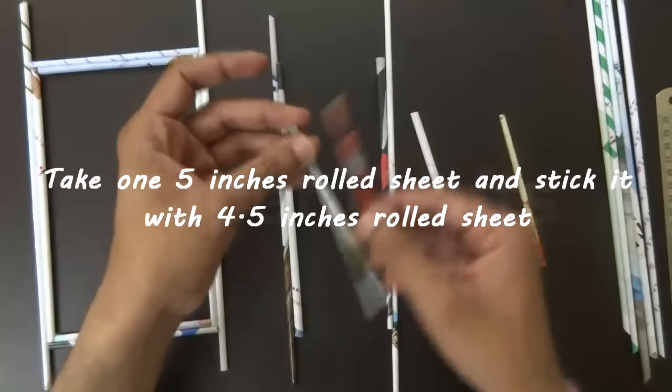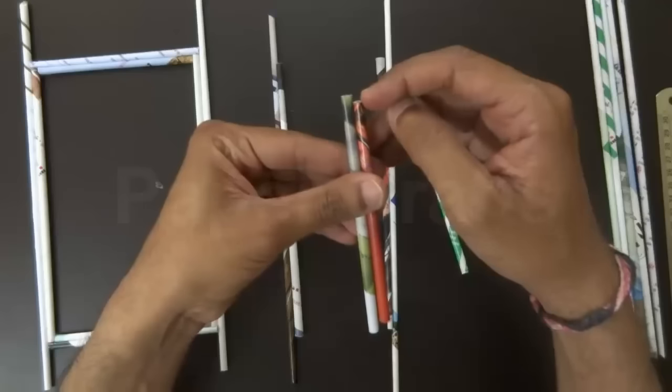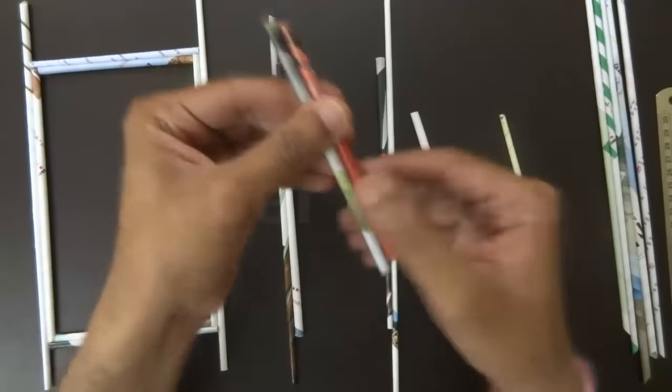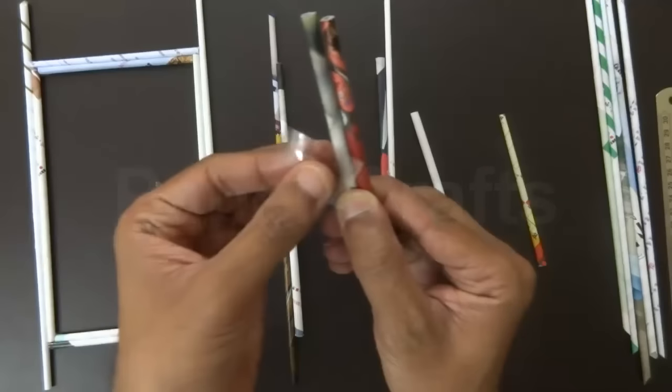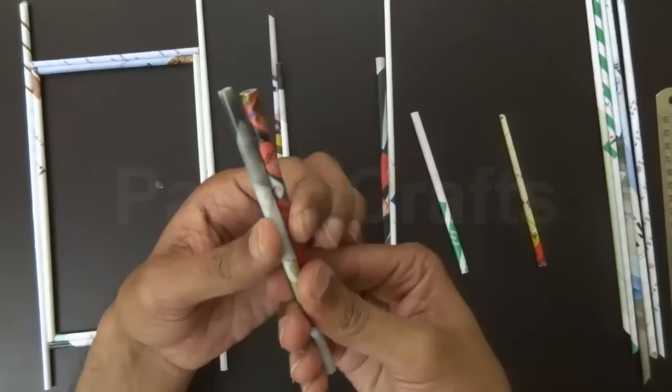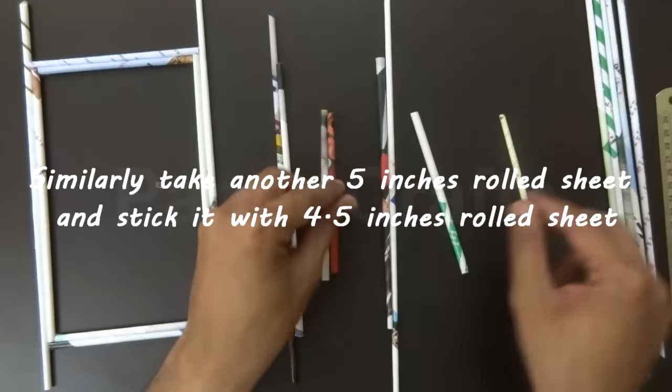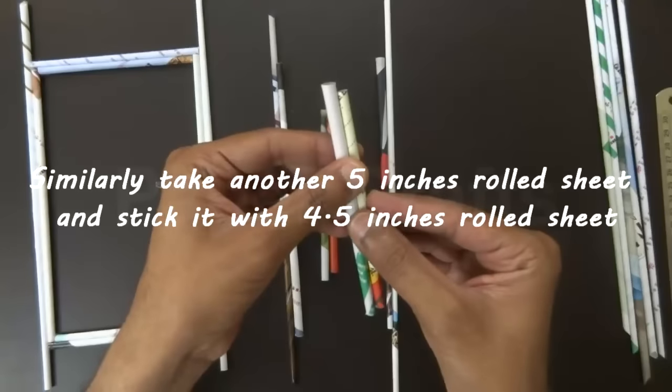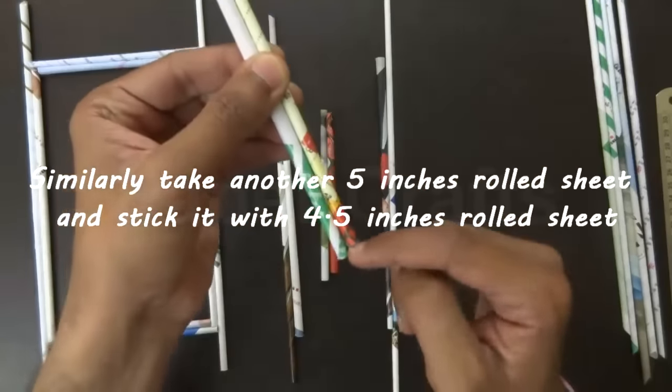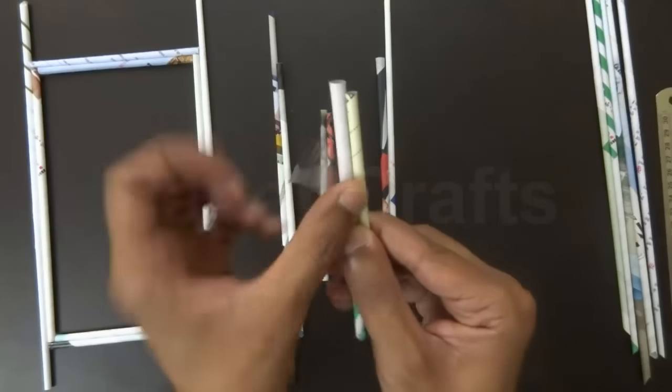Now take the 4.5 inch stick and glue them together so that there is some space on this side and some space on this side. Stick it together using glue or cellotape. Do the same thing with these other two. Leave some space upward and at the bottom.